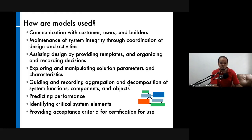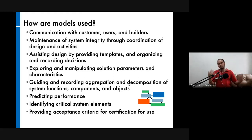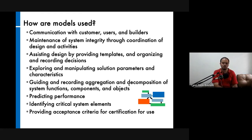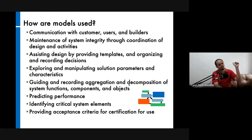Models help in design by providing templates and organizing and recording decisions. They can also help explore and manipulate solution parameters and characteristics — if you change one parameter, the model will show how everything else is impacted, making cause and effect clear. Models are also used for guiding and recording aggregation and decomposition of system functions, components, and objects, and can predict performance or do forecasting. They can identify critical system elements — if you remove a critical element, the system breaks down.